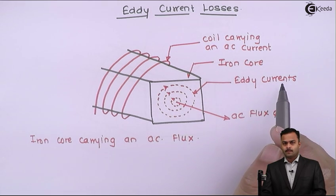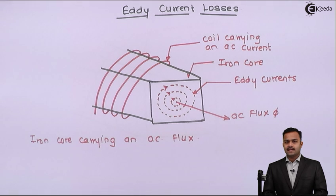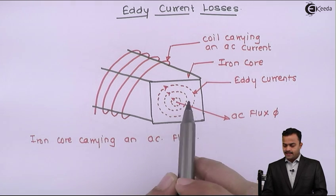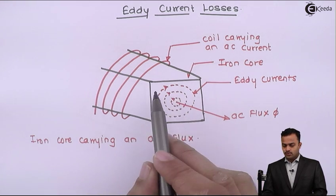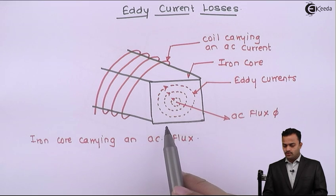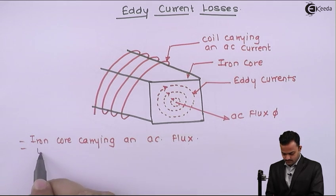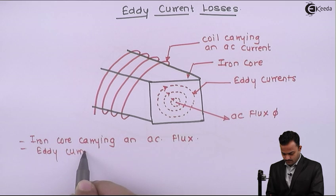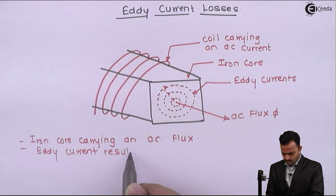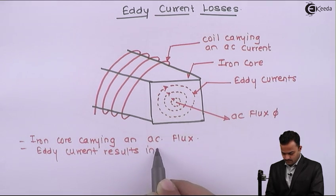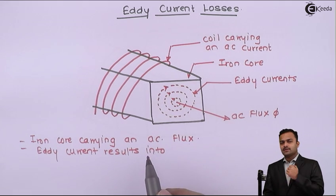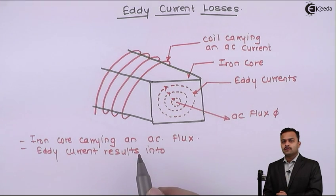What are the problems with this eddy current? This eddy current is flowing throughout the entire length of the core, and that results in I²R losses. Because of these losses, the core heats up.